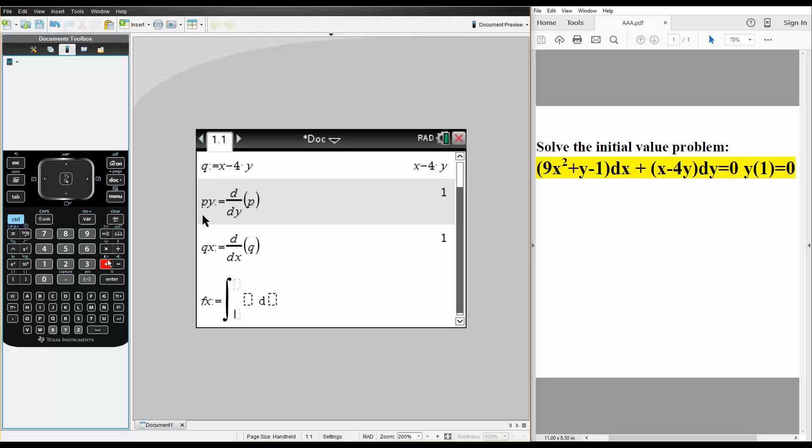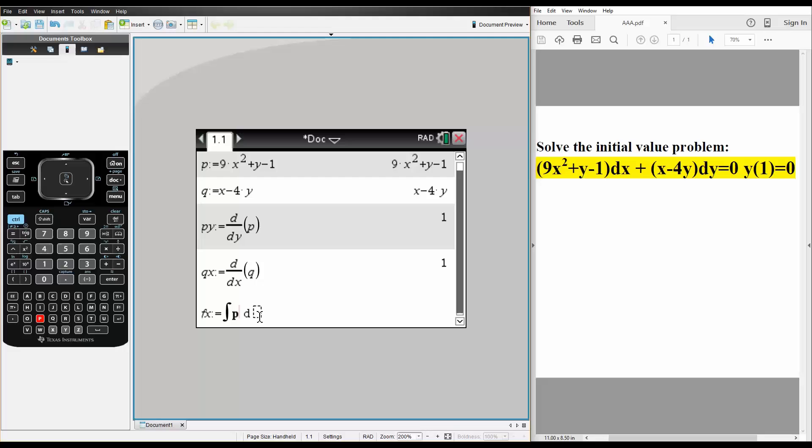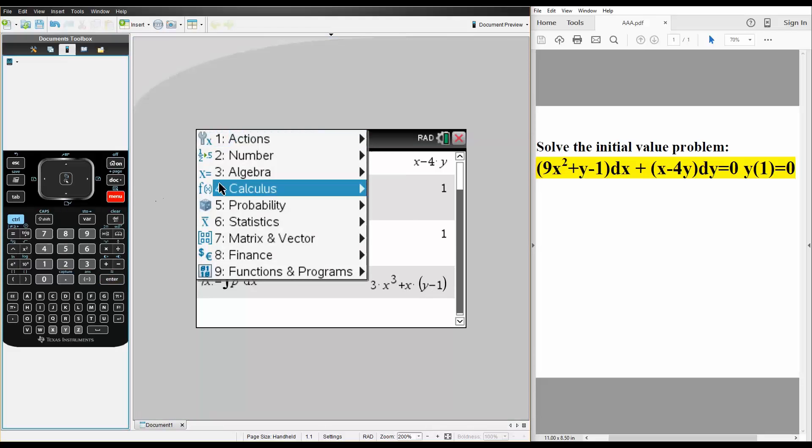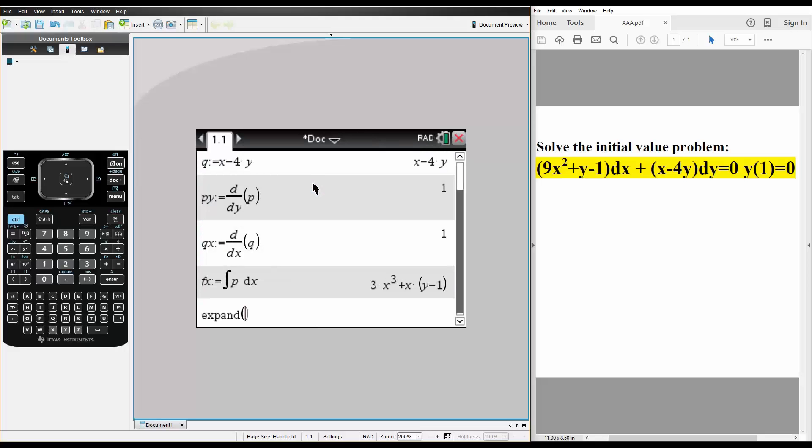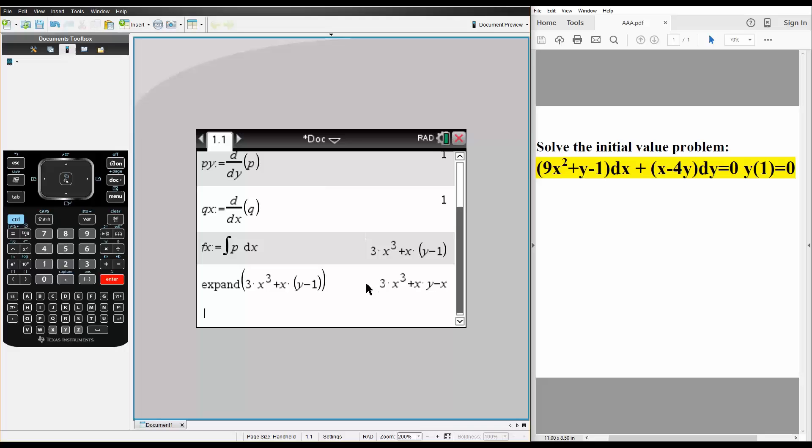And what we're going to take the integral of would be P in terms of dx. And next, we want to expand this equation right here. Because it's x times y minus 1, it will be easier for us later on. So, we'll hit algebra, we'll hit expand, and we want to expand this. So, this is what we get.